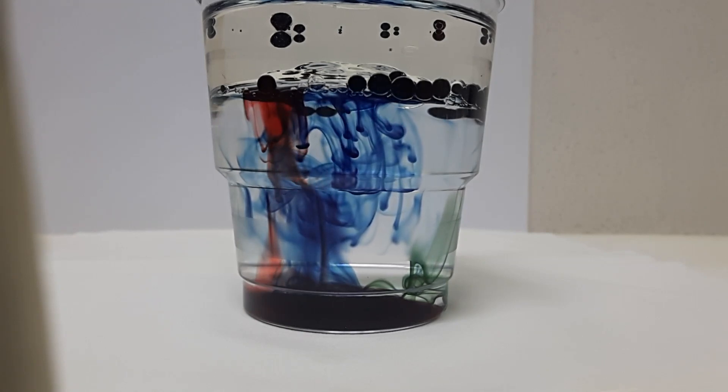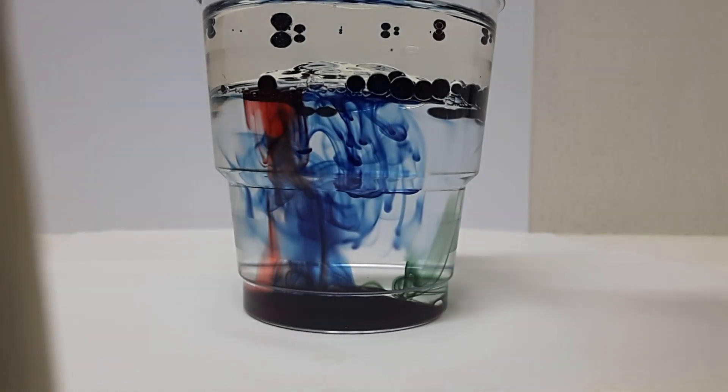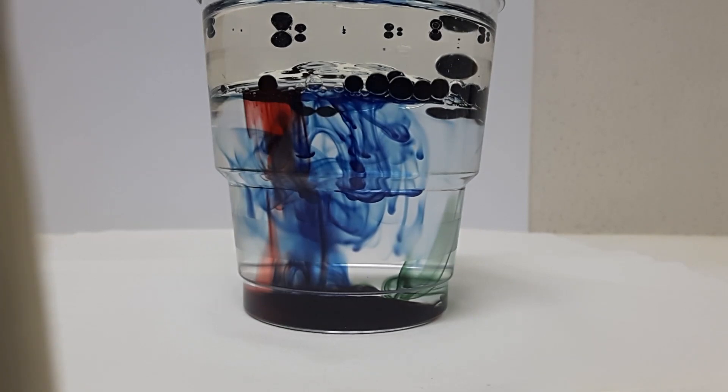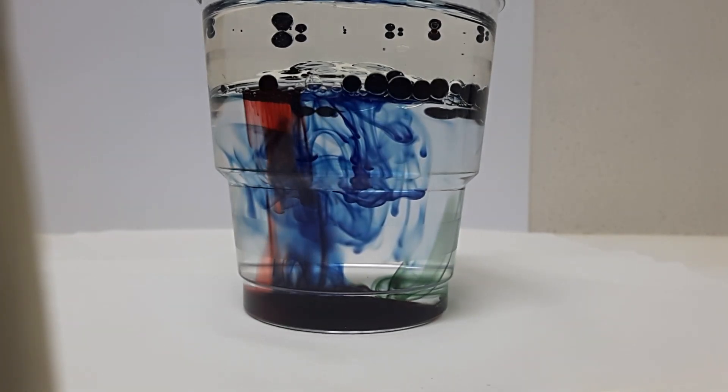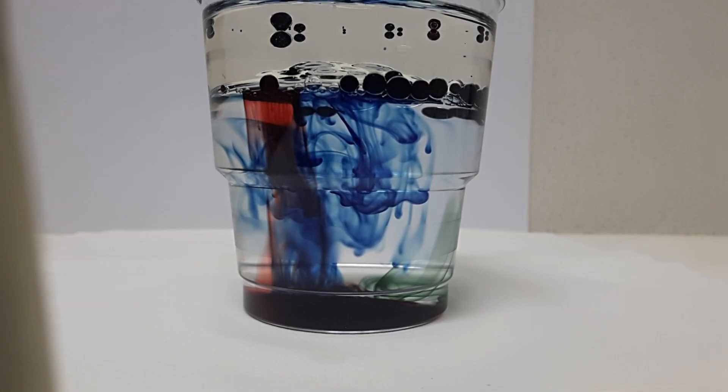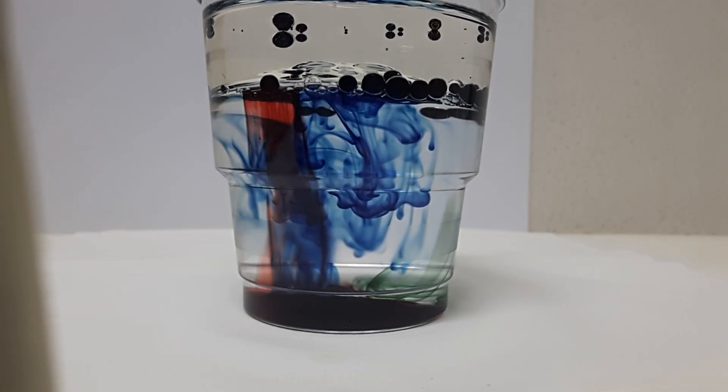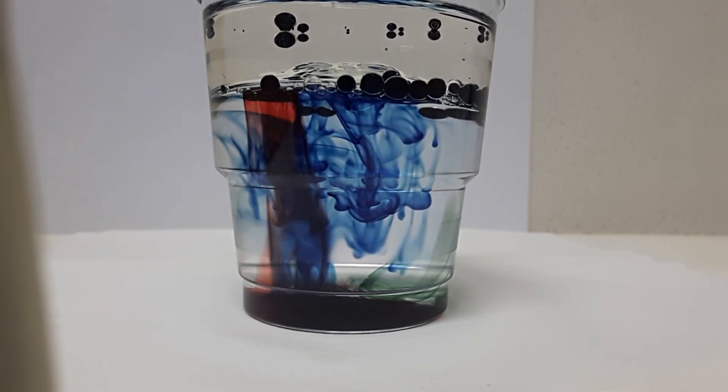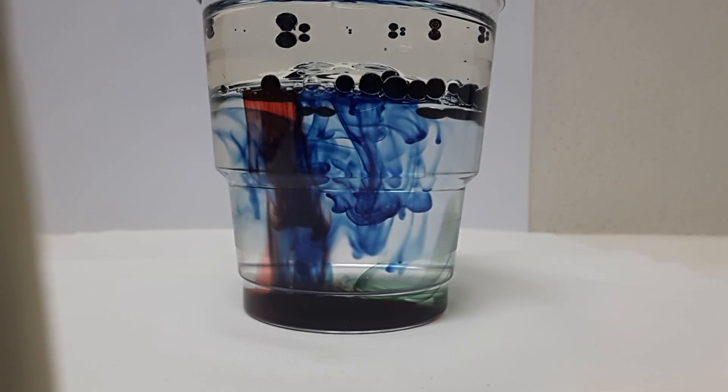Okay, now we are going to put some more green so we can see more colorings. Most of the food coloring has went to the side of the cup.